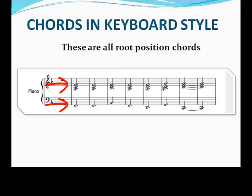Because we're in the key of F major, these first two chords can also be called I chords. Here we have a B flat major chord, also in root position because B flat is in the bass — in F major this could also be called a IV chord. We have another F major chord, which like the first two could also be called a I chord. Can you identify this chord? It's a D minor chord, which is a VI chord in F major. It's also in root position because we have a D in the bass, and it follows the doubling rule because the D is doubled in the treble clef.